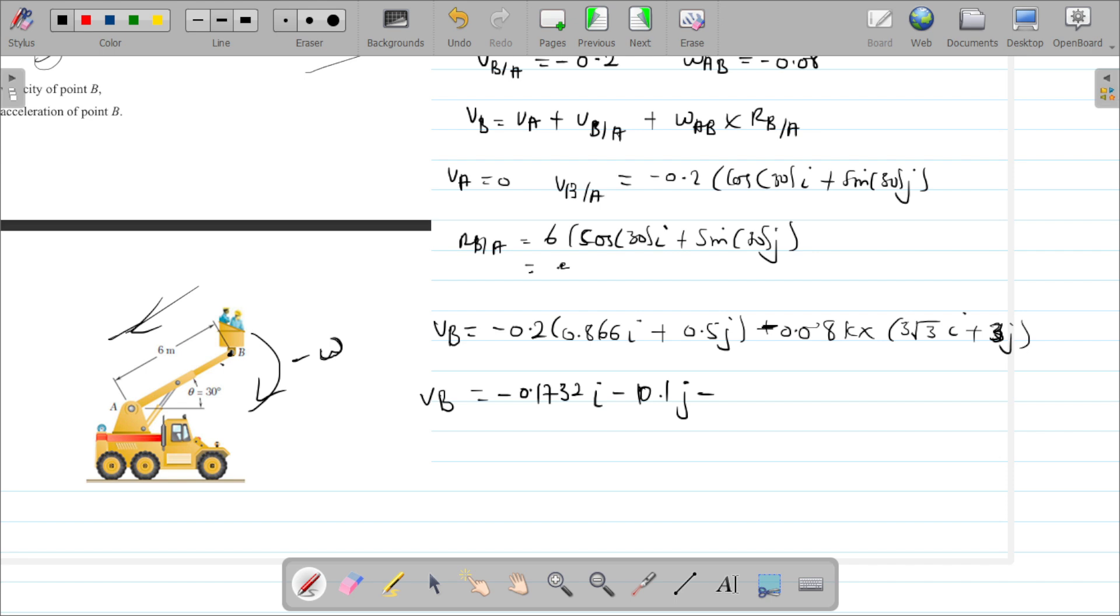For the cross product term: negative 0.08 times 3 root 3 is 0.4156, and k cross i gives j direction. Then 0.08 times 3 is 0.24, and k cross j gives negative i direction, so plus 0.24i. Now putting the i's together and j's together, we have 0.0668i and the j terms give minus 0.5156j.